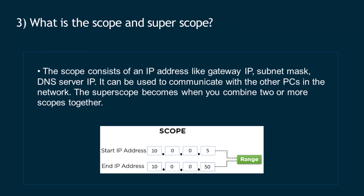Question 3: What is scope and super scope? The scope consists of an IP address like gateway IP, subnet mask, and DNS server IP. It can be used to communicate with other PCs in the network. The super scope is formed when you combine two or more scopes together.